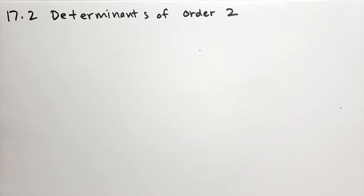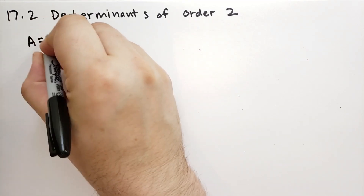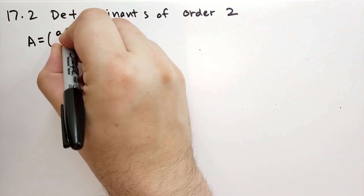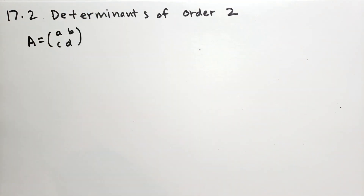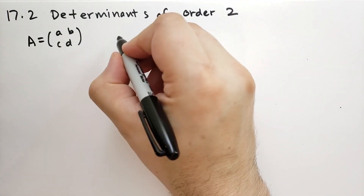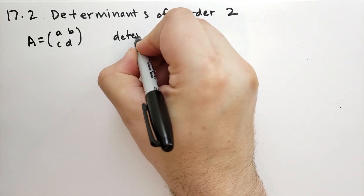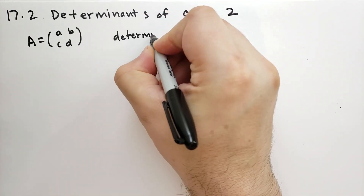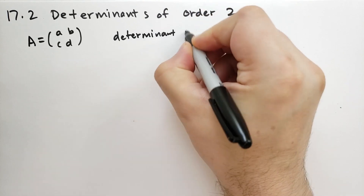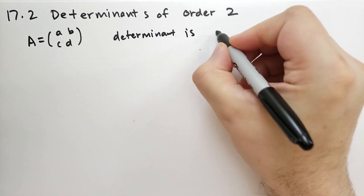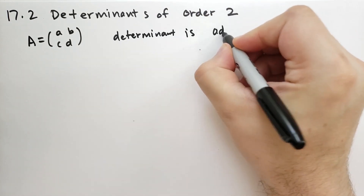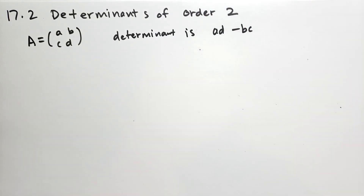So what is a determinant? Well, if we have a matrix defined to be A, B, C, D, then the determinant of the matrix is A times D minus B times C — AD minus BC.